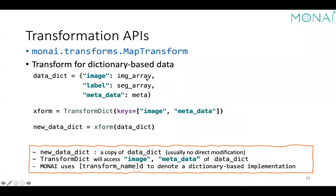Dictionary-based transforms are a counterpart of the array-based ones, following the naming convention of transform name plus 'D' to denote that the transform accepts dictionary-based data input. When making your own transformations, you should always make a copy of the data dictionary, update that copy, and return the new one, so that for multiple epochs of training, the same transformation is applied to the same dictionary content.